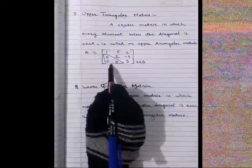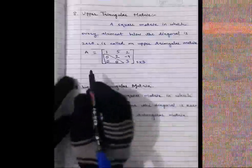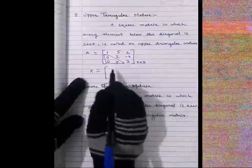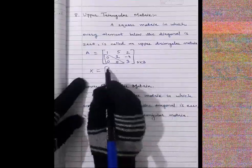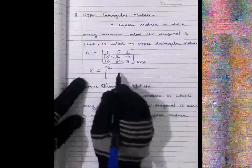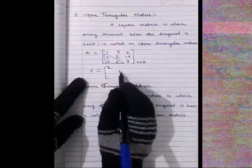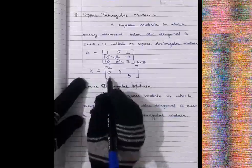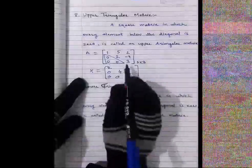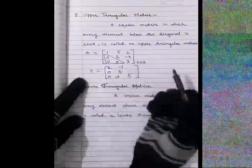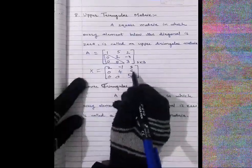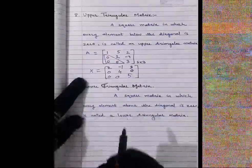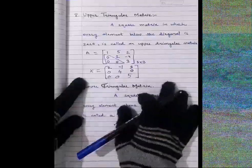Another example: matrix X with diagonal elements 1, 2, 4, 5, above-diagonal elements minus 1, 3, 0, and all below-diagonal elements zero. This also satisfies the conditions of an upper triangular matrix: it is a square matrix and every element below the diagonal is zero.